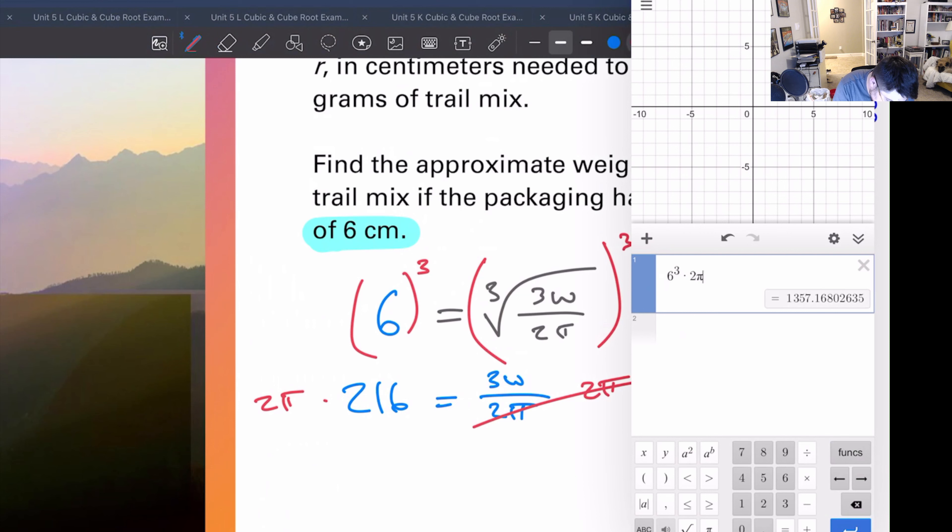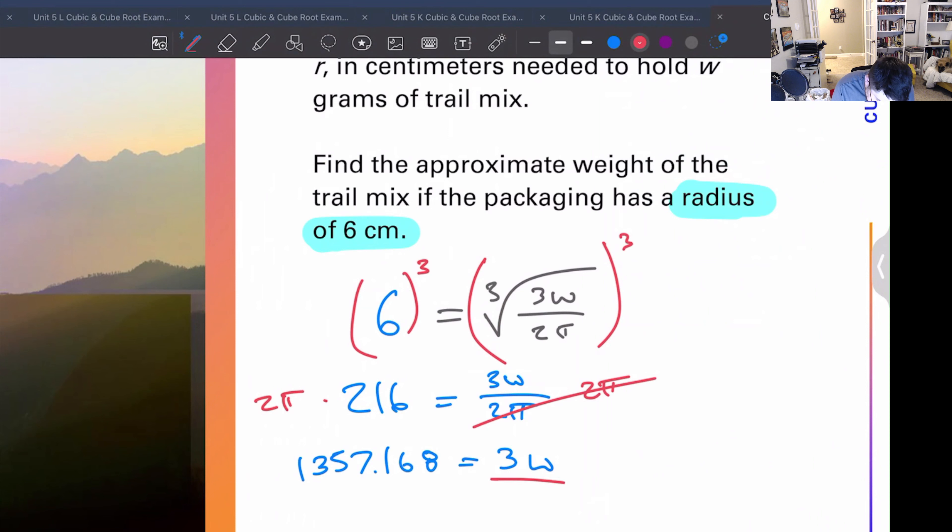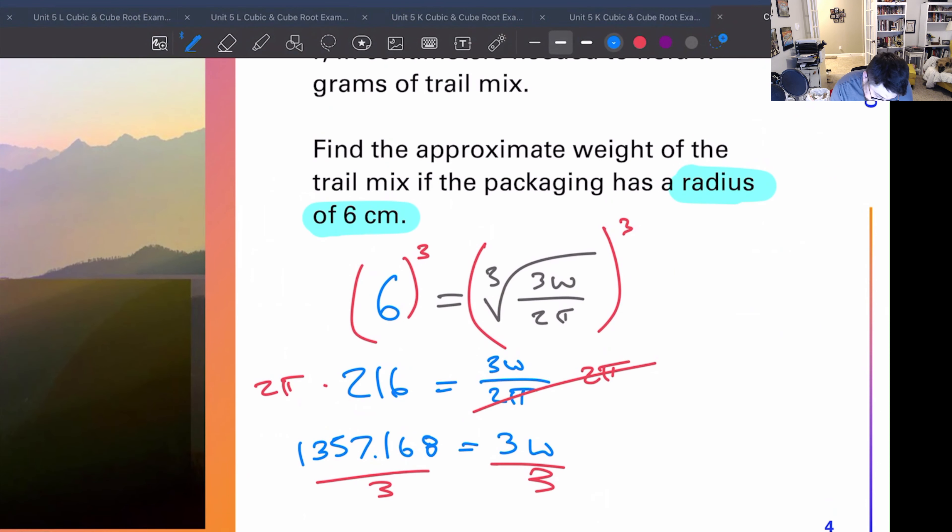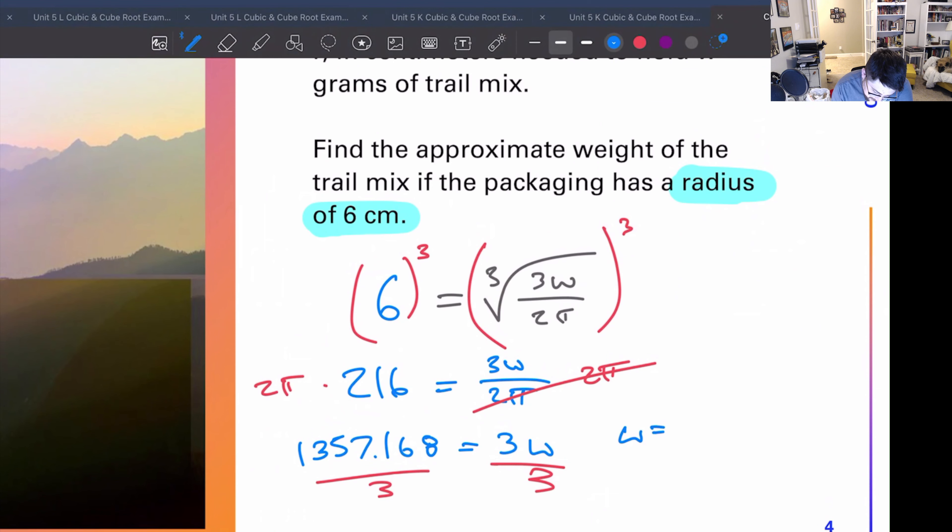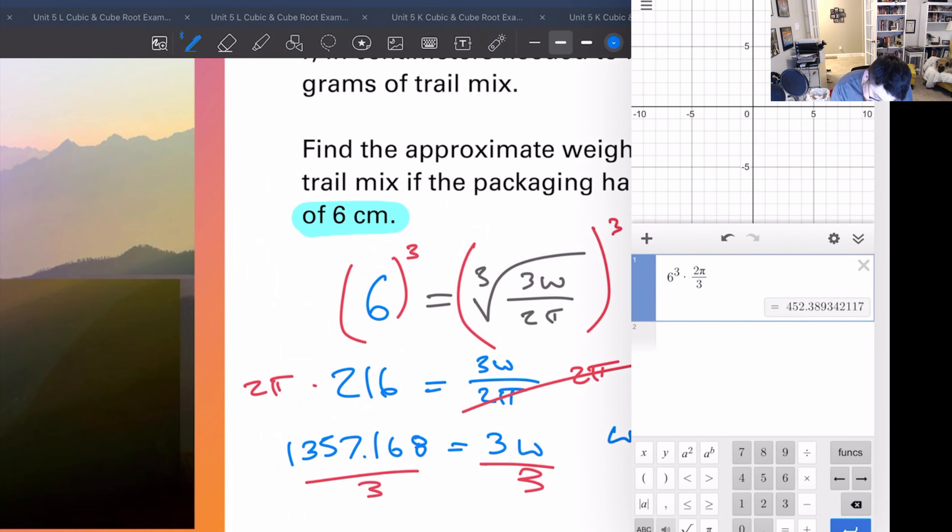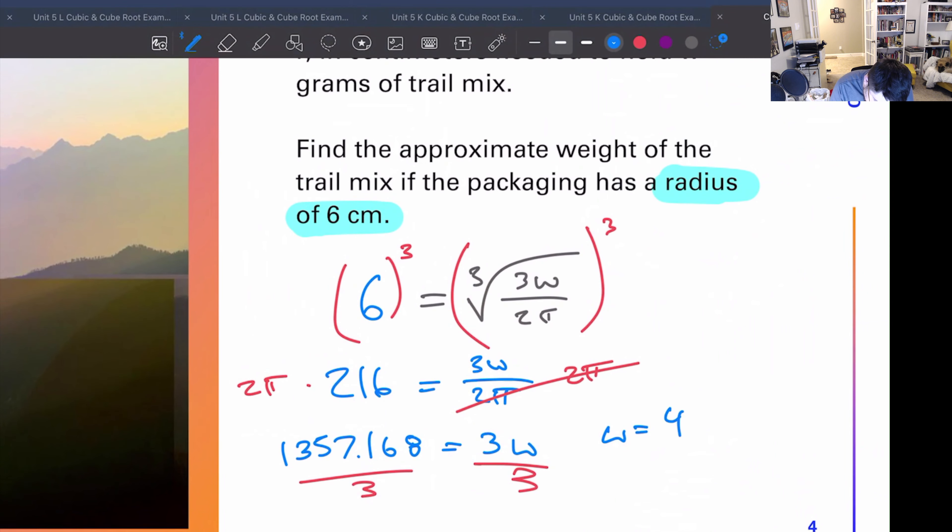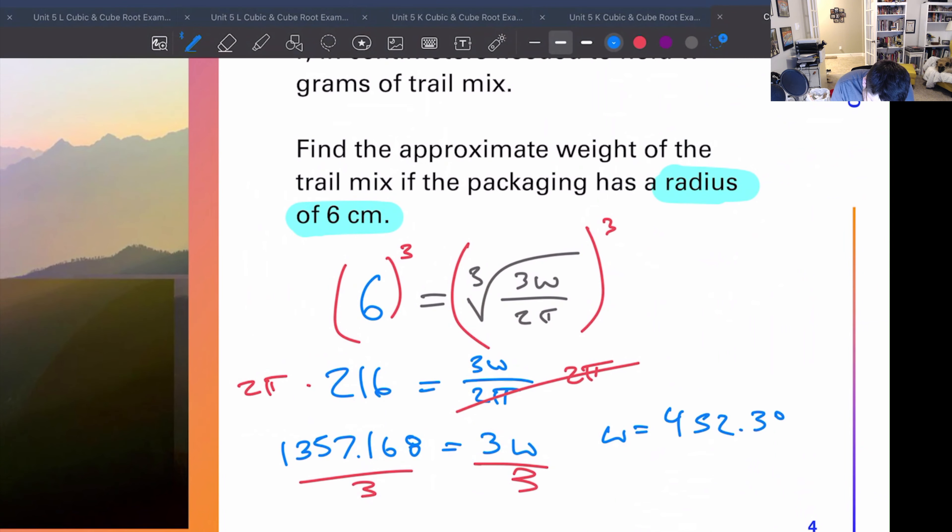2 pi, we'll do times 2 pi, we'll do times 2 pi, and it gives us 1357. Do this in a different color, 1357.168, that's enough level of detail, equals 3w. We'll take all this, we'll divide it by 3 because we want to get rid of the 3 in front of the w.